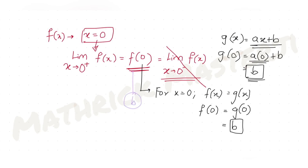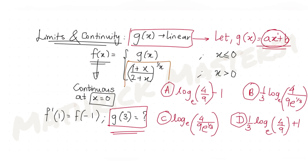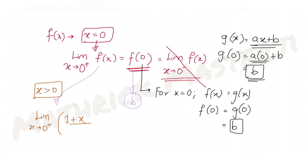Now let's find the right-hand limit. As x tends to 0+, f(x) = (1 + x)/(2 + x) raised to 1/x. Substituting x approaching 0 gives (1 + 0)/(2 + 0) raised to 1/0, which is (1/2) raised to infinity.